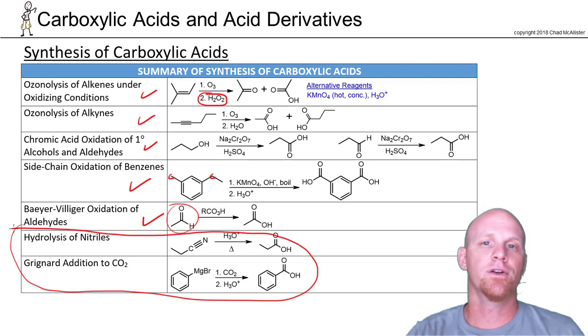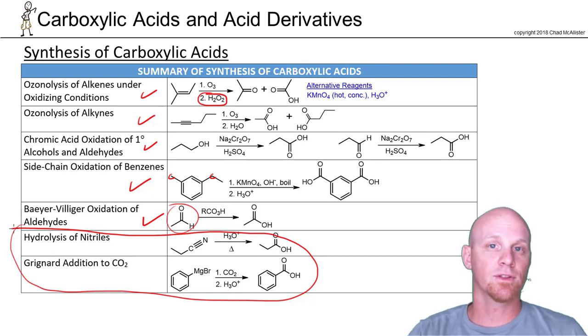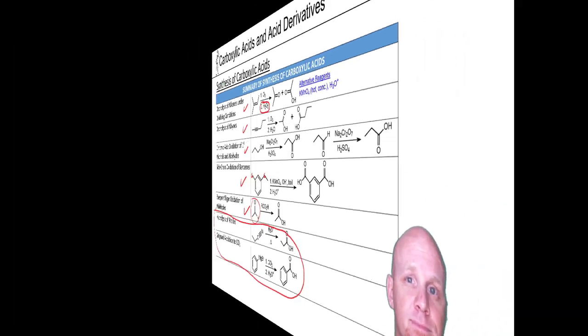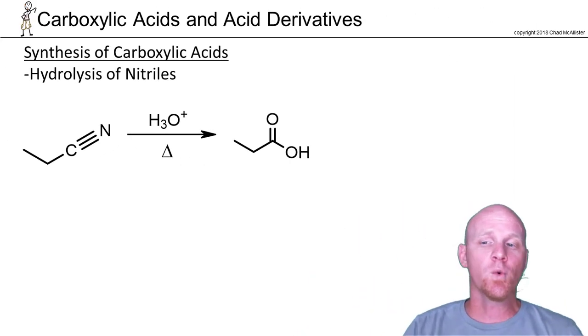I'm not going to take a lot of time and go over all the old ones—they're review, you can look them up. But the two new ones are what I want to talk about now. The first new way to make a carboxylic acid is the hydrolysis of nitriles.